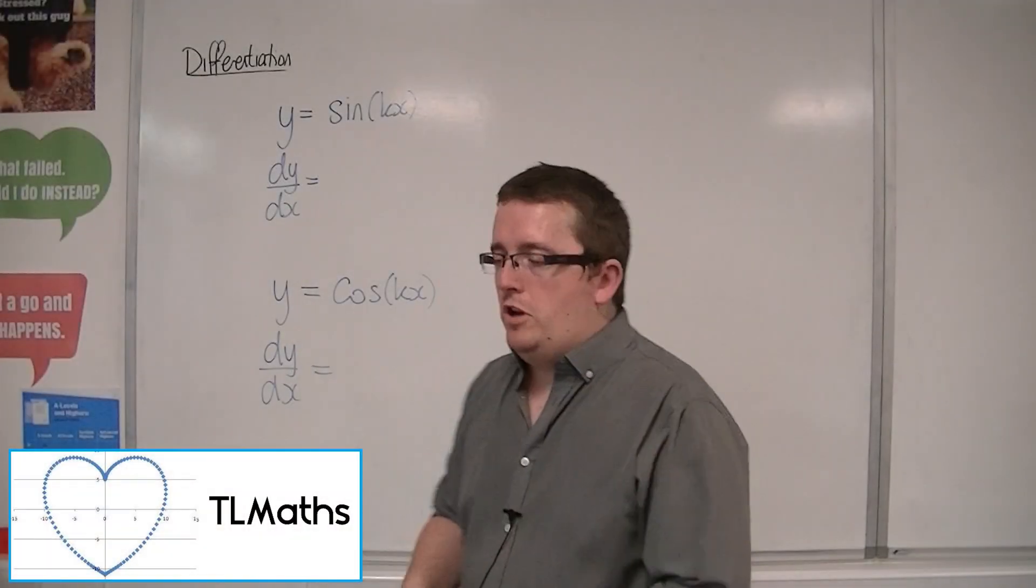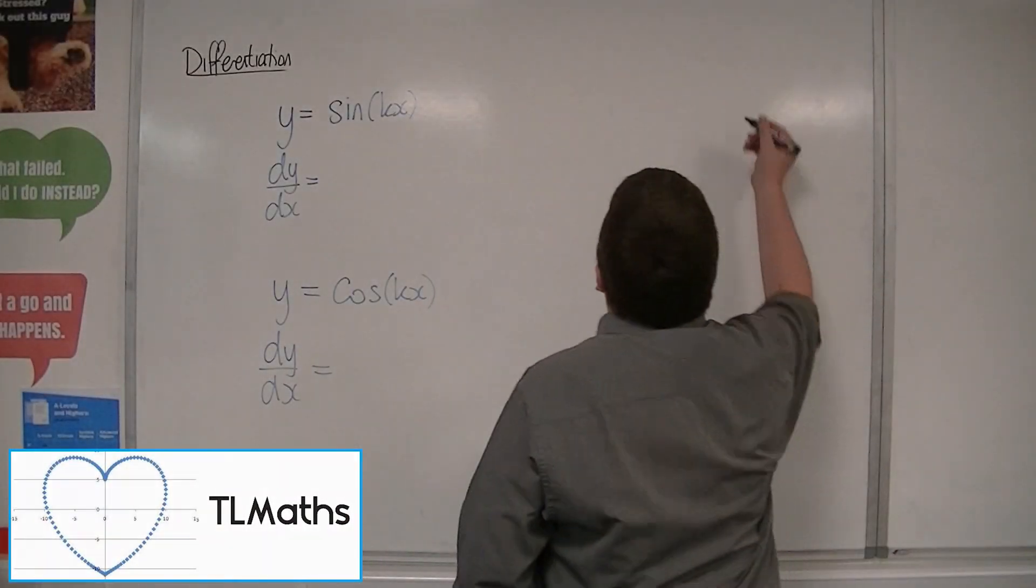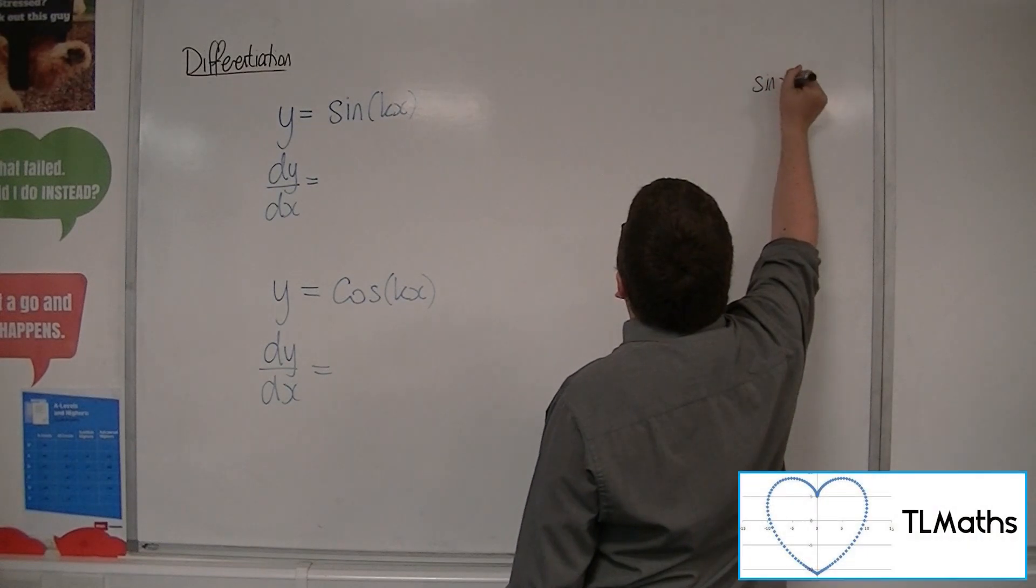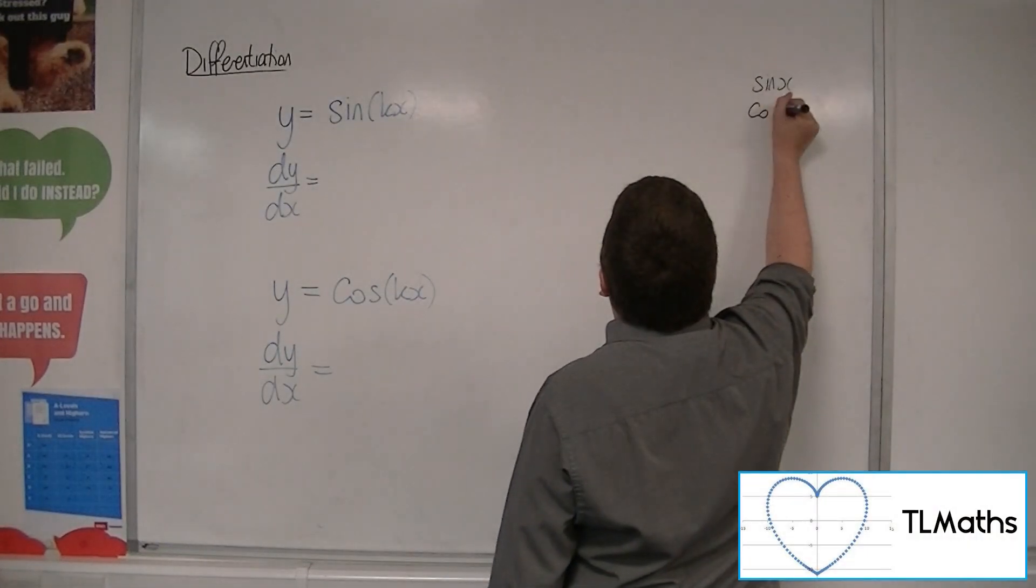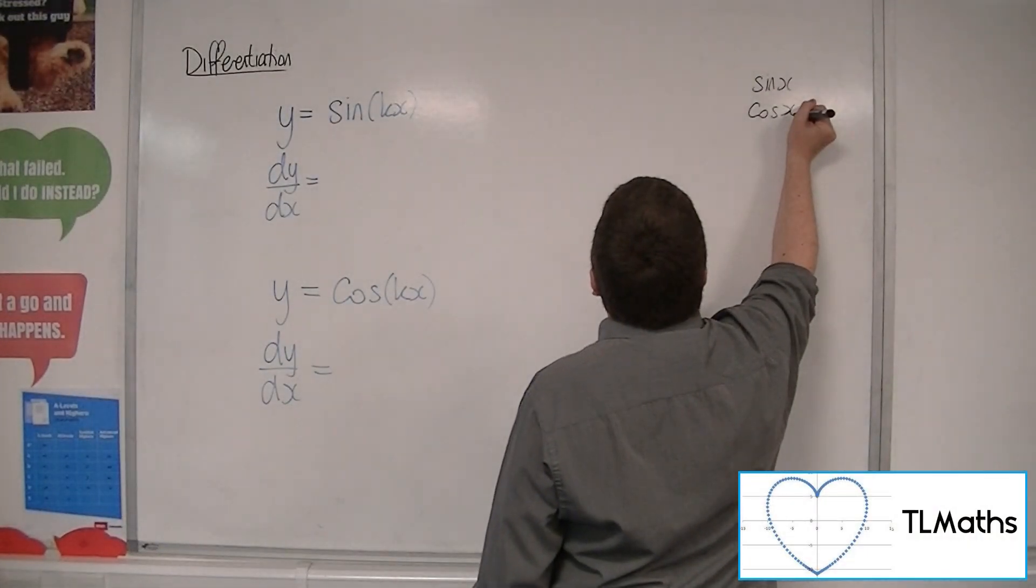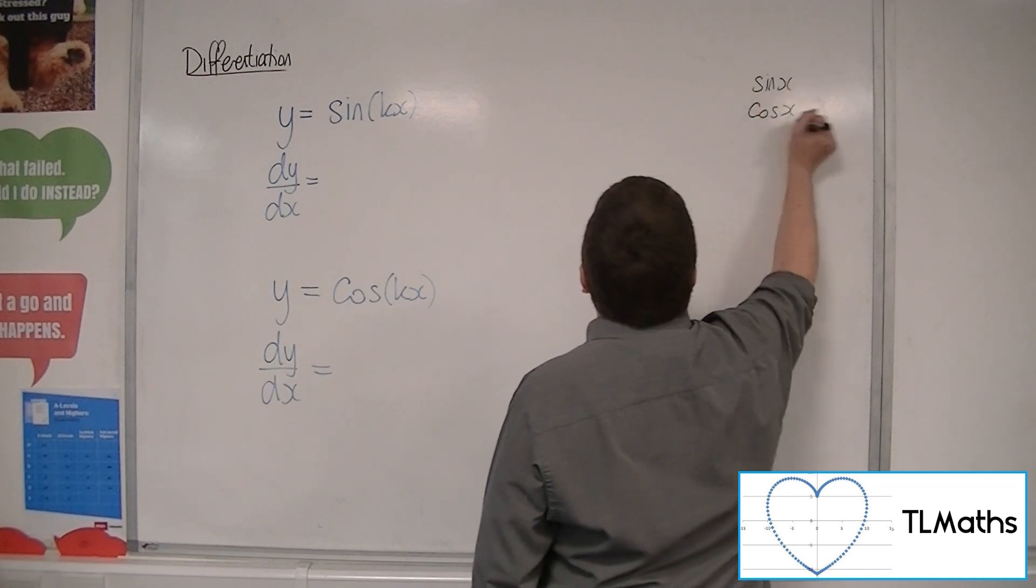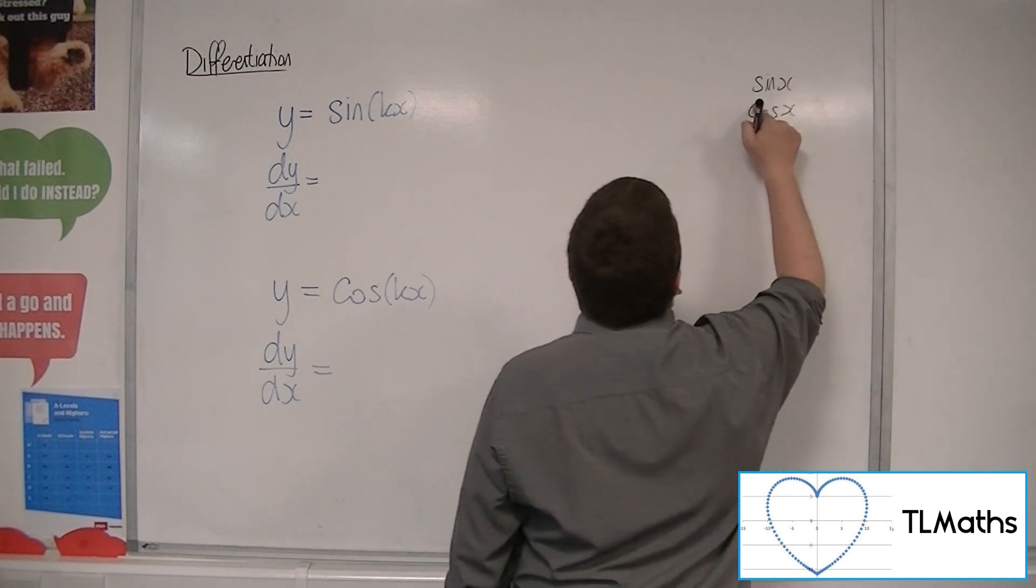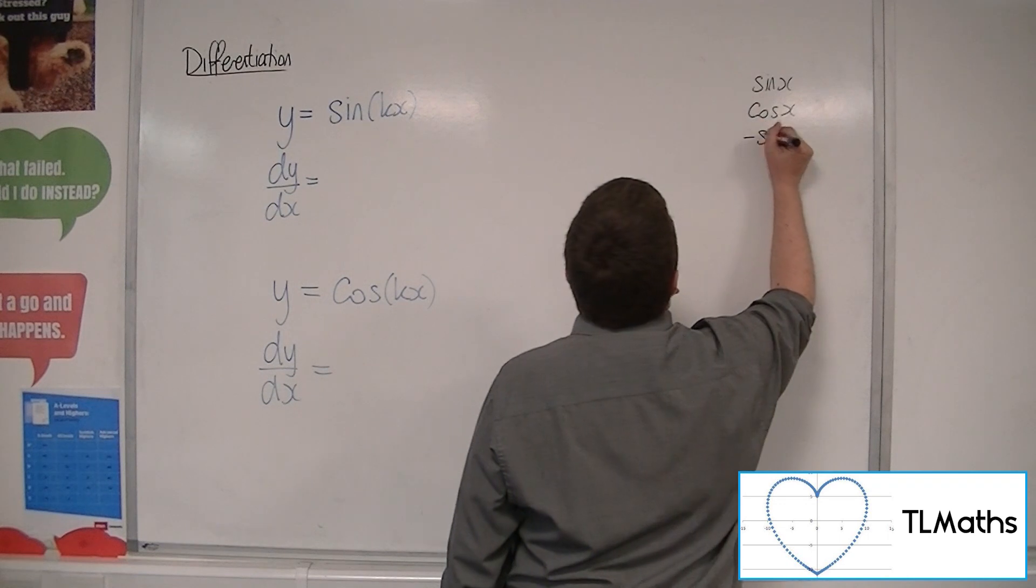So we've seen when we differentiate from first principles that sine of x will differentiate to cosine of x. Now cosine of x we also saw when we differentiated from first principles became minus sine x.